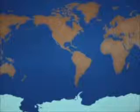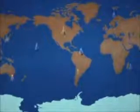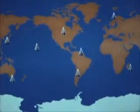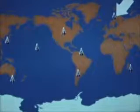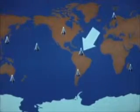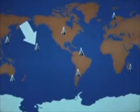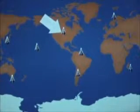To provide worldwide coverage, the Omega system will use eight VLF transmitting stations, one in Norway, another in Trinidad, one in Hawaii, and another in north-central United States.